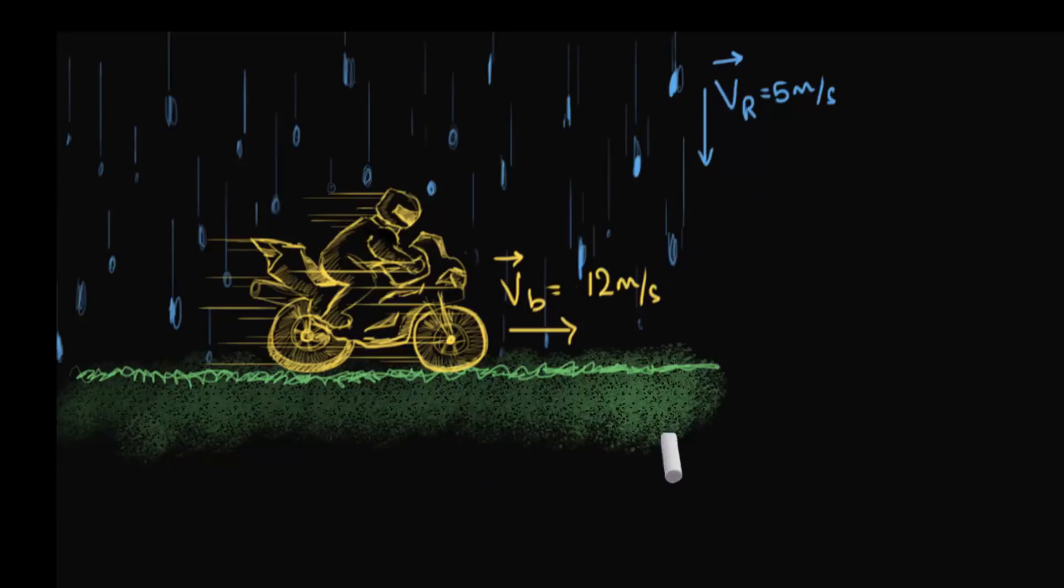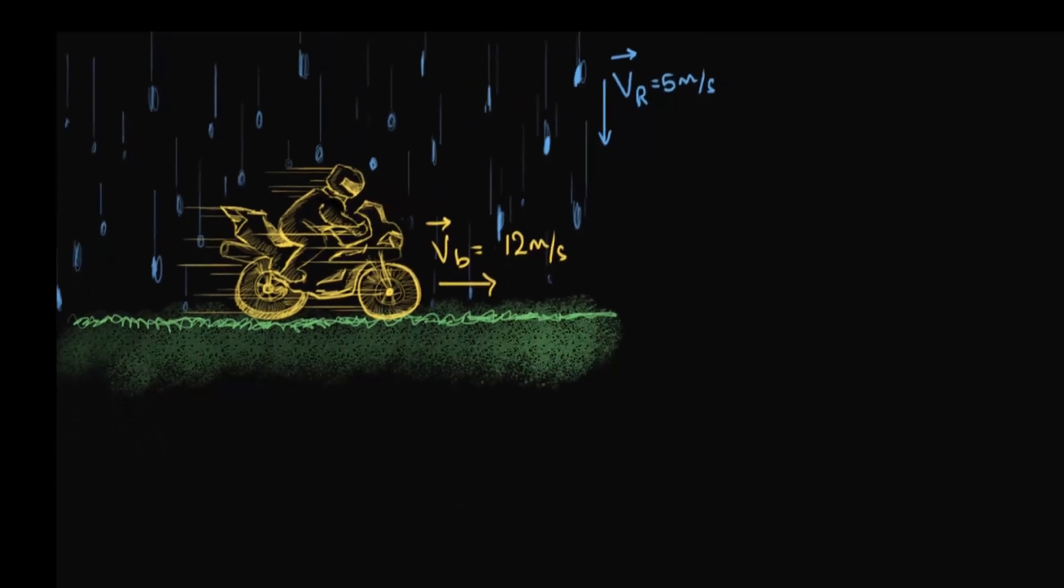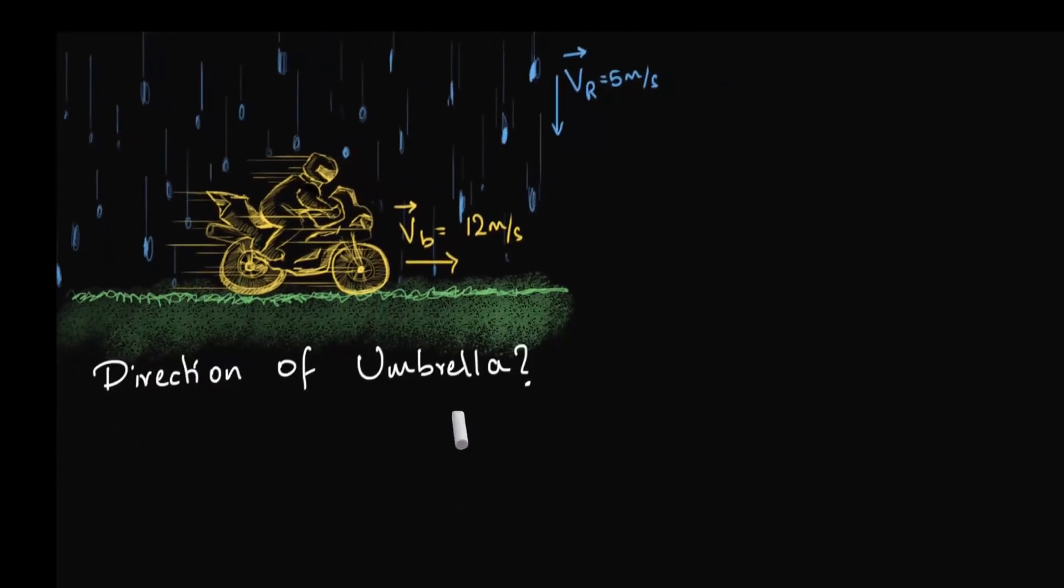Suppose we have a situation where it's raining and the rainfall speed is 5 meters per second, and suppose you are traveling on your bike at 12 meters per second towards the right. The question is, in what direction should you hold your umbrella?